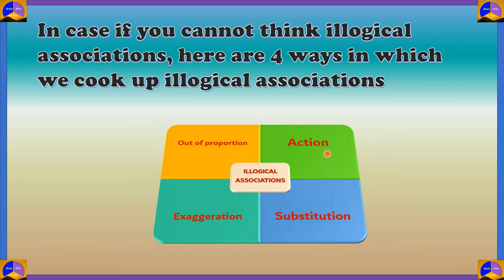Remember the shirt and tack example where the shirt was made out of millions of tacks and it started hurting you — that's an example of exaggeration. Finally, the most common way people use illogical associations is substitution. For example, to connect clock and mug, we took the function of the mug — drinking tea — and imagined drinking tea with a clock instead. That is a classic example of substitution.